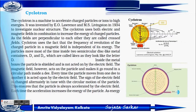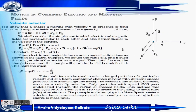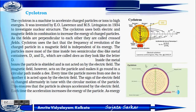The next topic is the cyclotron. The cyclotron is a machine that accelerates particles or ions to high energies. It uses both electric and magnetic fields in combination to increase the energy of charged particles. Since the fields are perpendicular to each other, it is called a cross field. The cyclotron uses the fact that the frequency of revolution of a charged particle in a magnetic field is independent of its energy.